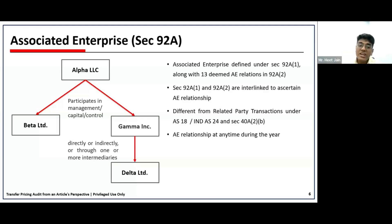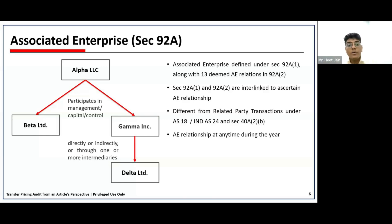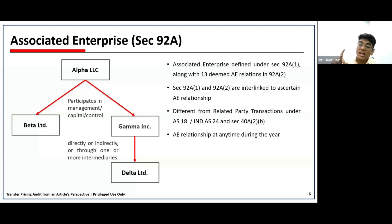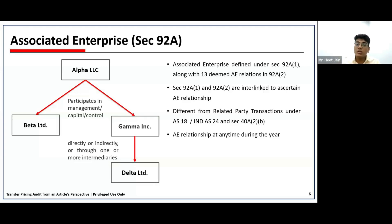When one entity exercises management, capital, or control of two other entities — say Beta Limited and Gamma Limited — even in that case those two entities would be deemed associated. Section 92A(2) is a more criteria-based section where there are 13 prescribed conditions, on satisfying which transactions would be regarded as deemed associated enterprise relations. Both Section 92A(1) and 92A(2) should ideally be looked at together.